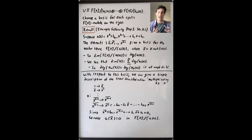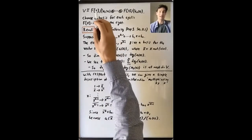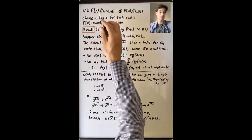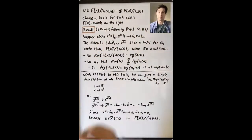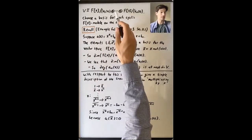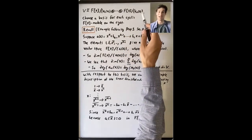Let's consider the main setup from this lecture, where V is a finite dimensional vector space over a field F, T is a linear transformation from V to itself, so that makes V into an F[x]-module. Applying the classification theorem for modules over a PID, we see that V is isomorphic to this direct sum of cyclic F[x]-modules: F[x] mod the ideal generated by a₁(x), direct sum with F[x] mod the ideal generated by aₘ(x).